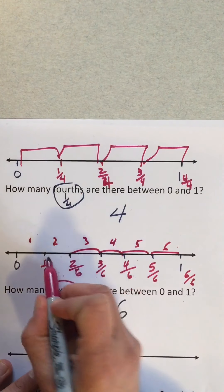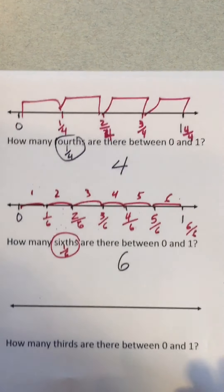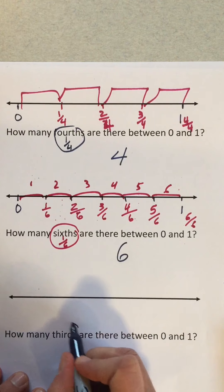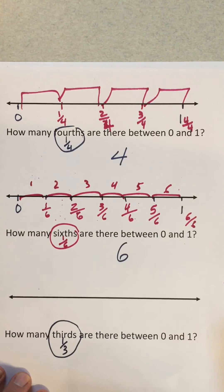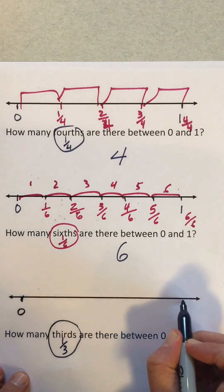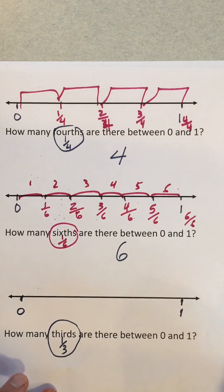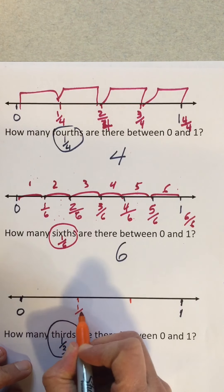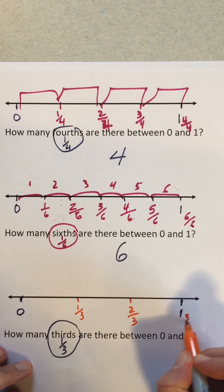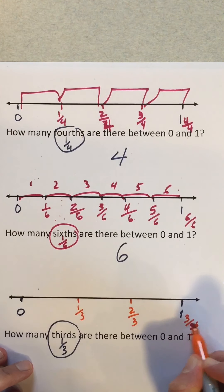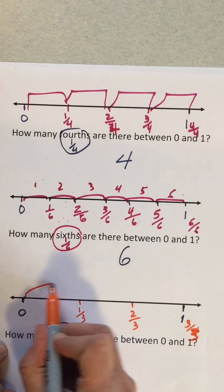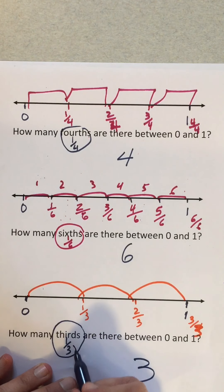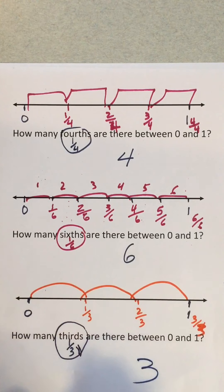One more — how many thirds? This is a third. Between zero and one: this is one third, this is two thirds, this is three thirds. How many is that? One, two, three — my answer is three. You might look at this and know the answer is three, but I'm just trying to show you why there are three parts.